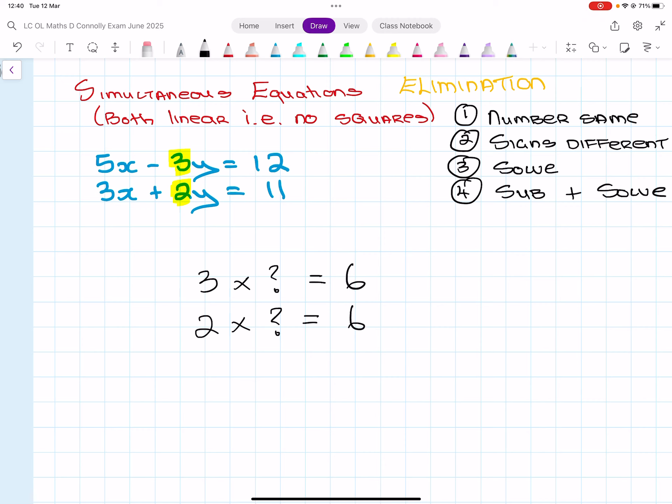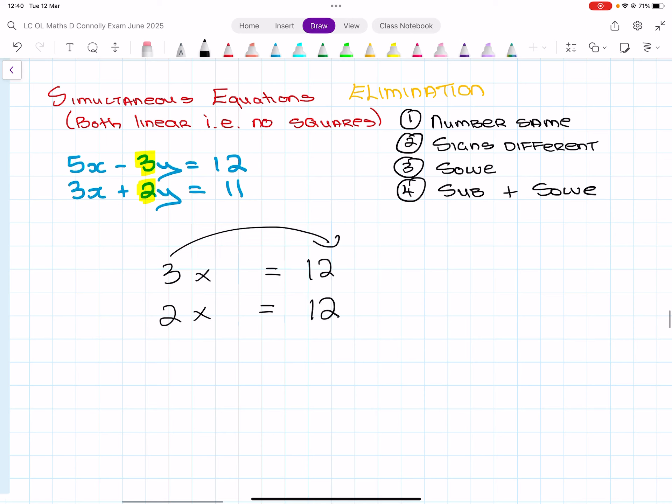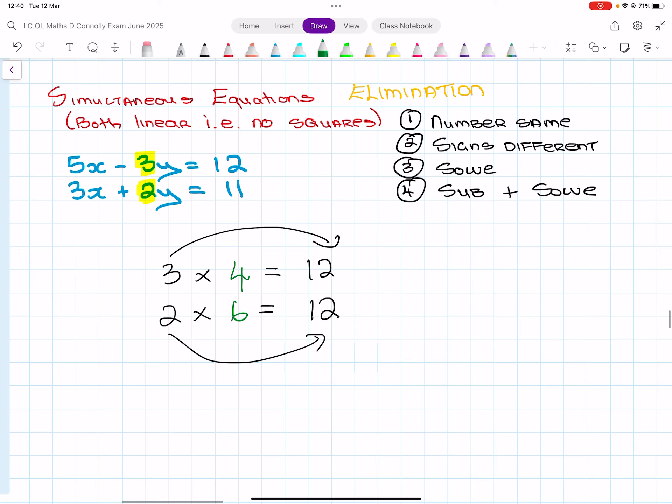So I can turn a three into a six by multiplying it by two. You could also turn them into a 12. So you can multiply three by four to turn it into a 12, and you can multiply two by six to turn it into a 12. So it doesn't really matter what you do. You just have to end up with the same number at the end. Yeah, because I'm trying to get these two yellow numbers, instead of being different, I want them to be the same.